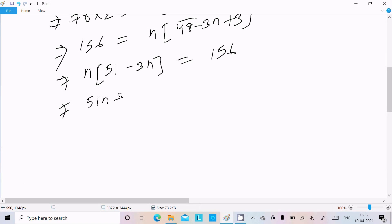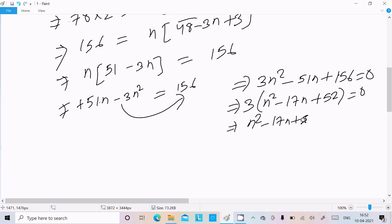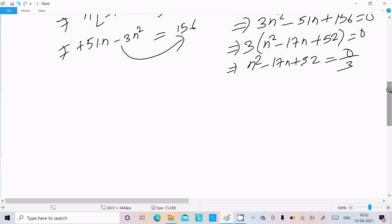51n minus 3n squared equals 156. Moving terms to the right: 3n squared minus 51n plus 156 equals 0. Taking 3 as common factor: n squared minus 17n plus 52 equals 0.